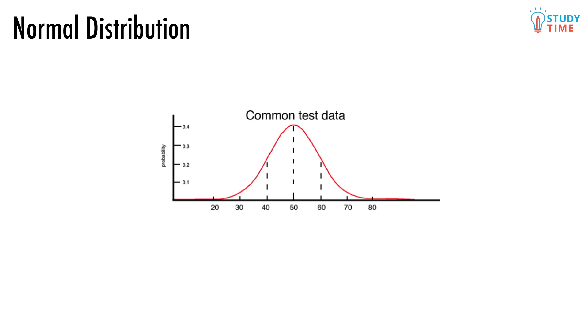Whenever some data is normally distributed, we know that most of the data is centered around the mean. The further from the mean on both sides we get, the less data there is. And there's about half the data above the mean, and half below it. So this data is normally distributed, and the graph we've got here is called the normal distribution.